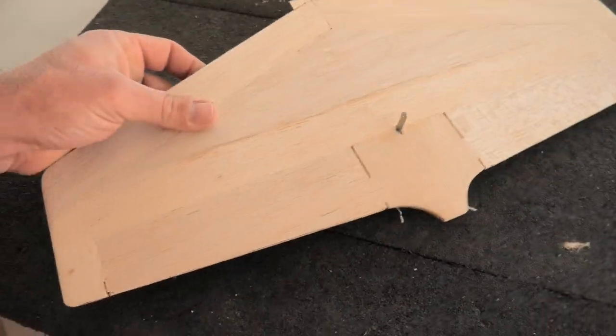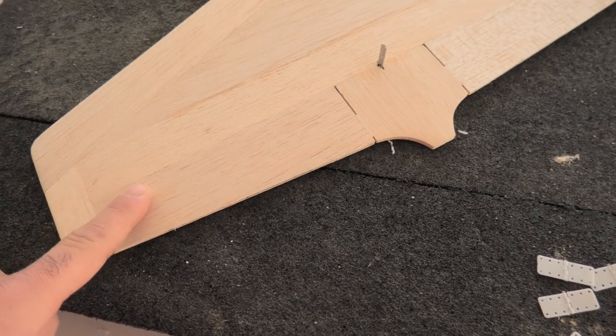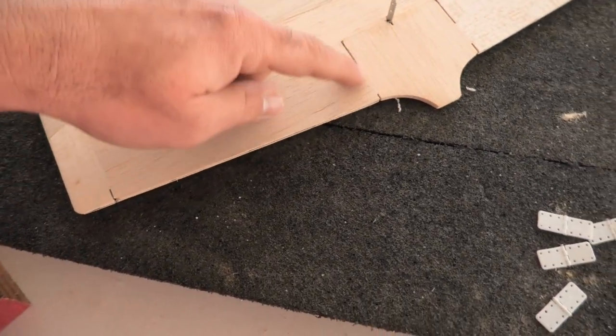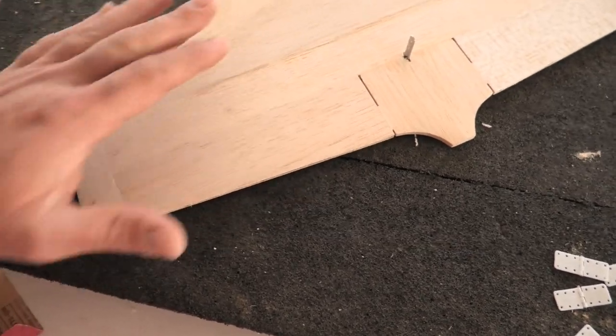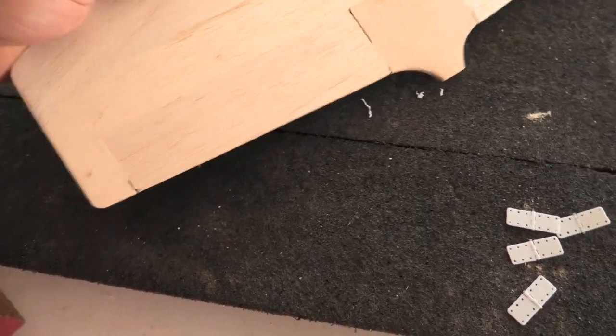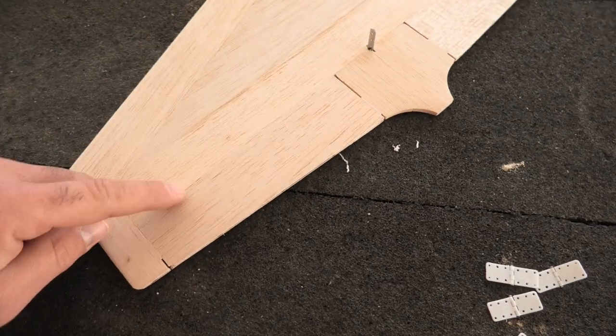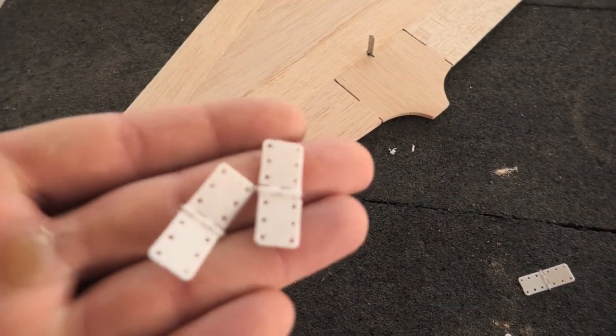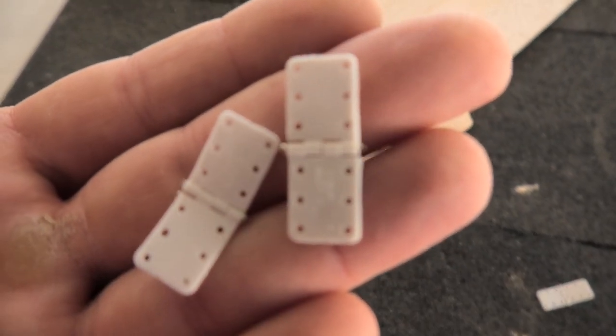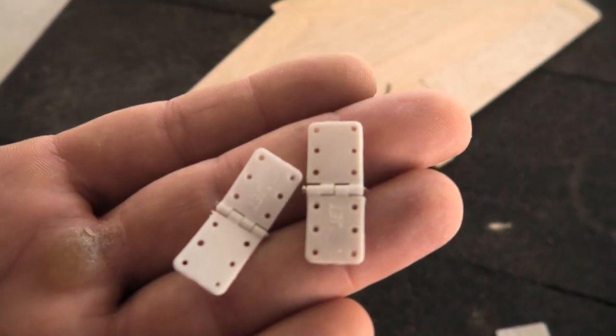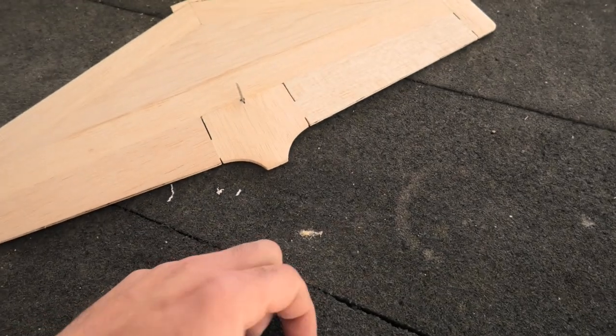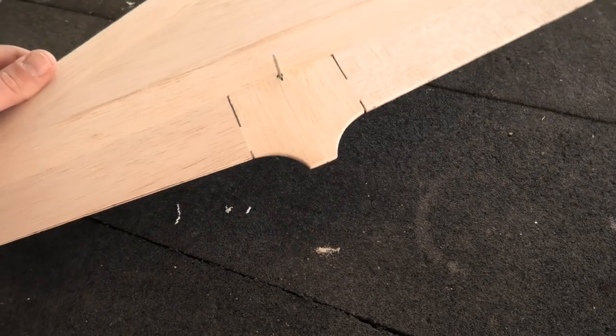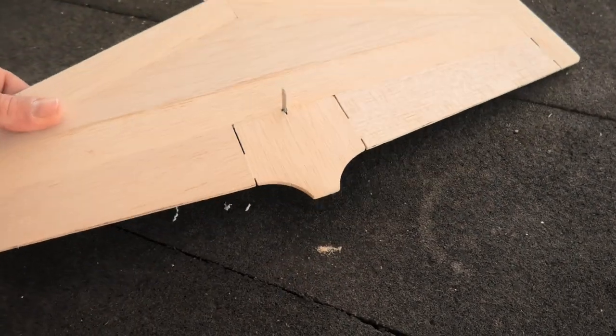Next thing I'm going to do is hinge the elevators. If you remember, I have just temporarily tacked the elevators in place so I can sand everything neatly. I'm going to have to cut these loose, and I'm going to be using two of these MPJet pinned hinges, two on each side. So we'll get on with that. That would probably be pretty boring, so I'm just going to go ahead and do it, and then I'll show you what it looks like when it's done.